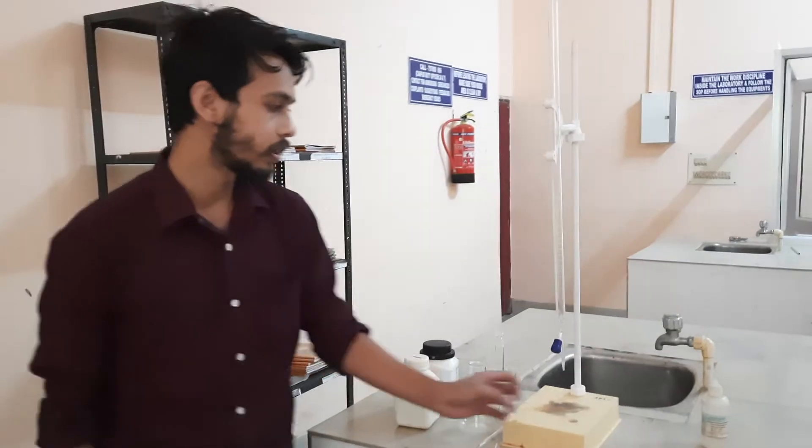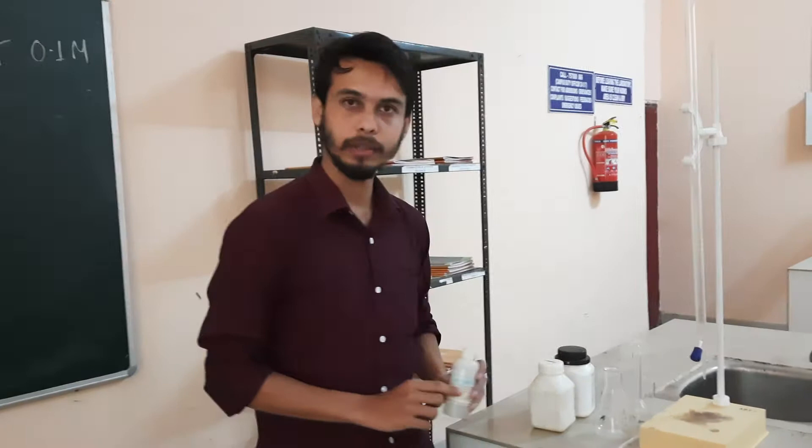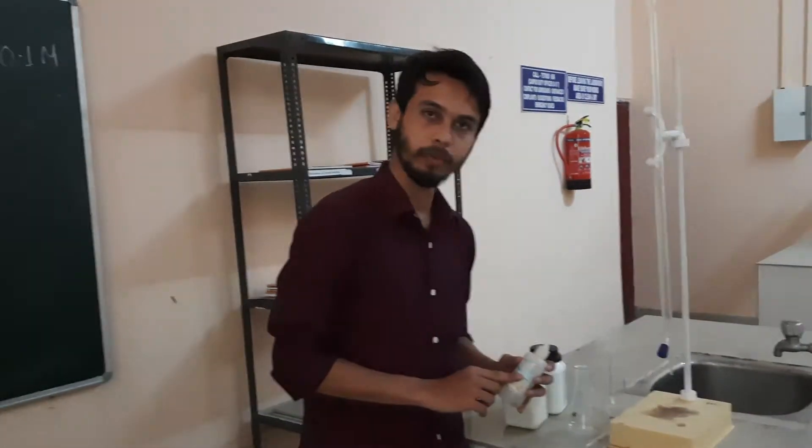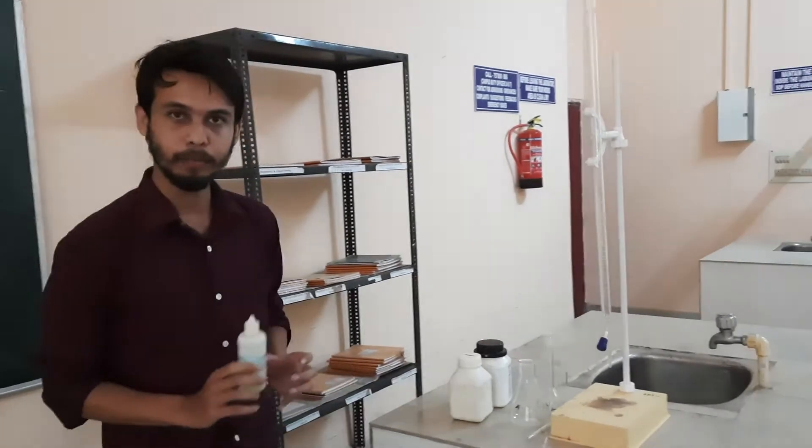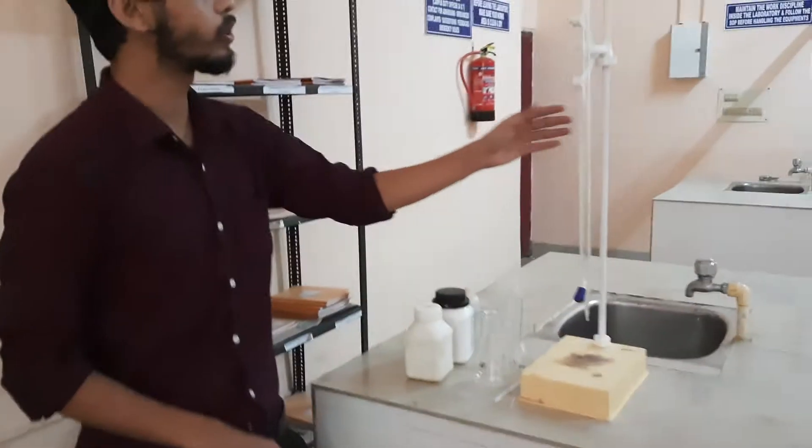Some indicators we need. There is phenolphthalein we are going to use. Because it is a titration, we need some indicators. So in this particular experiment we are going to use phenolphthalein as indicator to determine the end point. And conical flask, I am going to use this one.